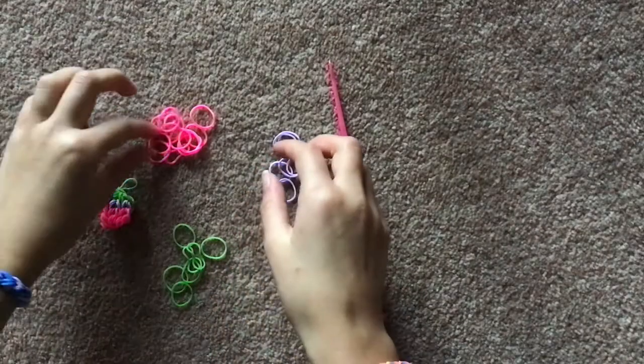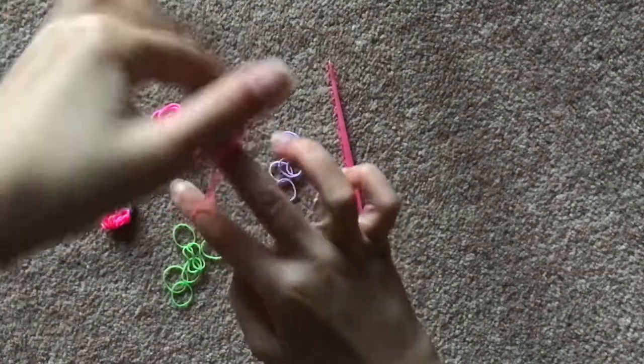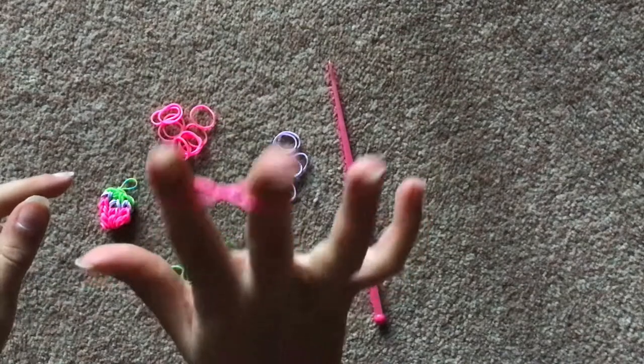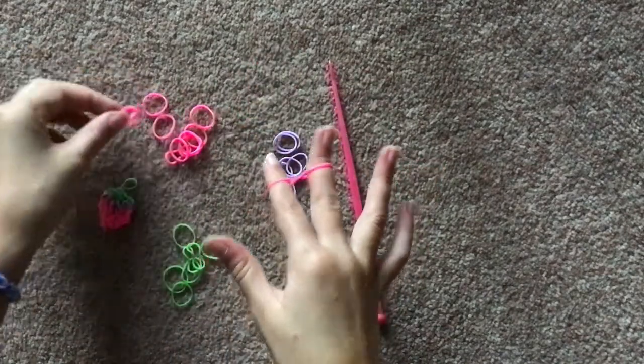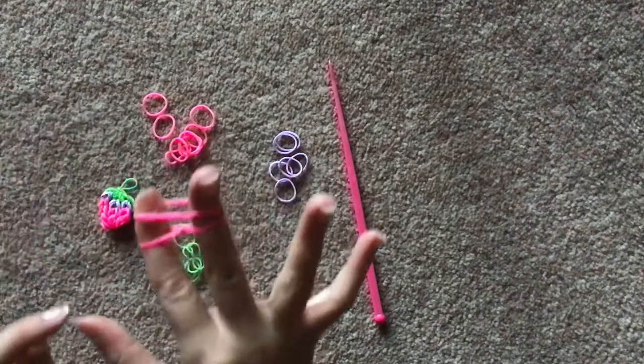To start off we're going to take two dark pink rubber bands and put them on our two fingers but make a cross so it's like a cross in the middle, looks a bit like an eight. Then take two more and put them above them but this time don't cross them, keep them straight.